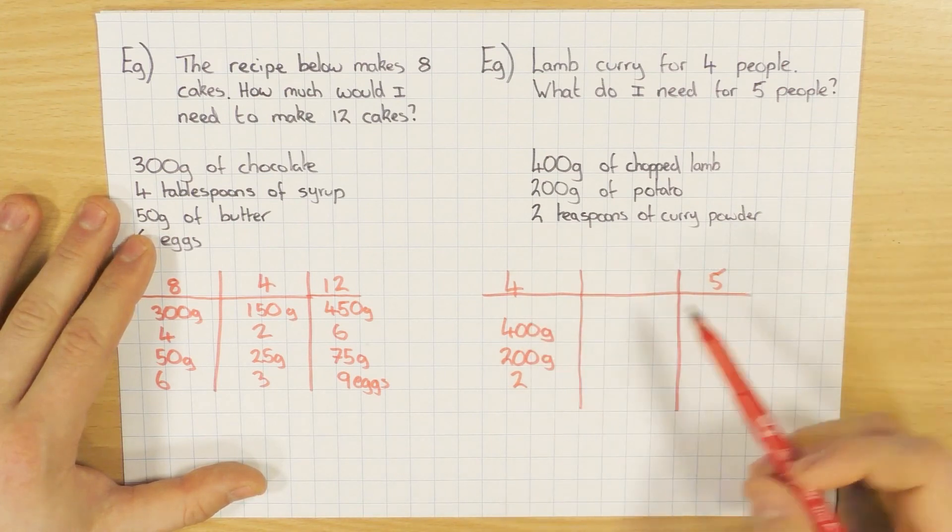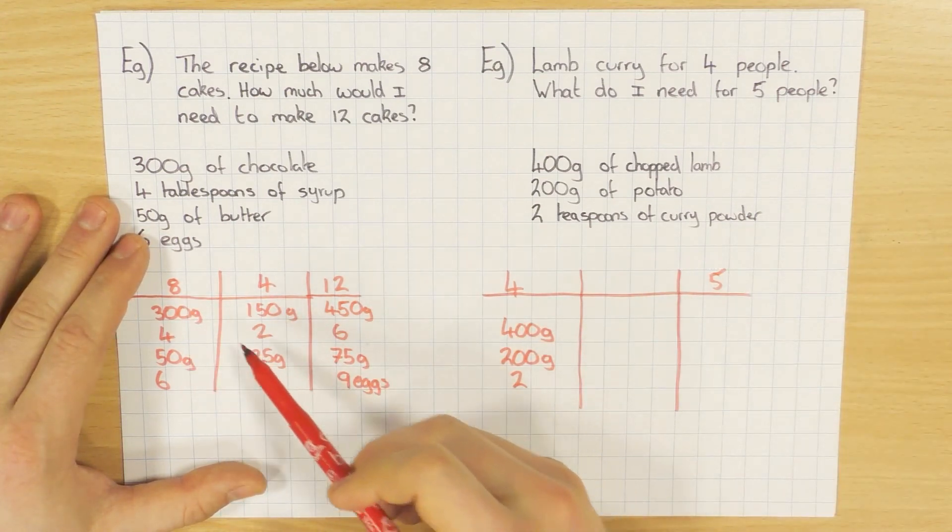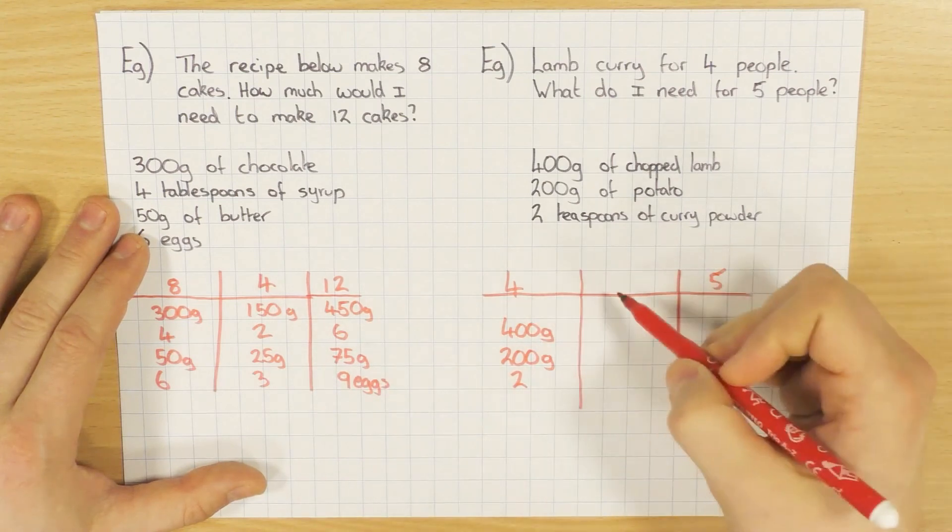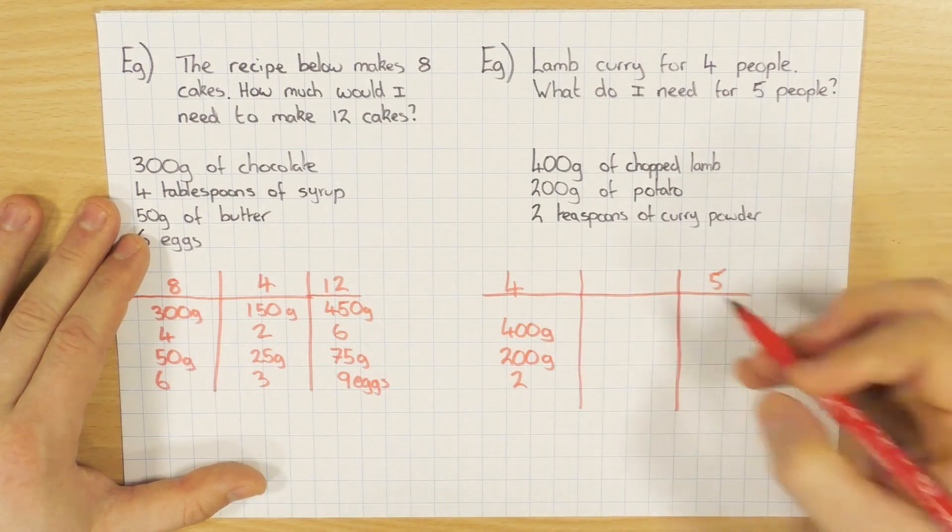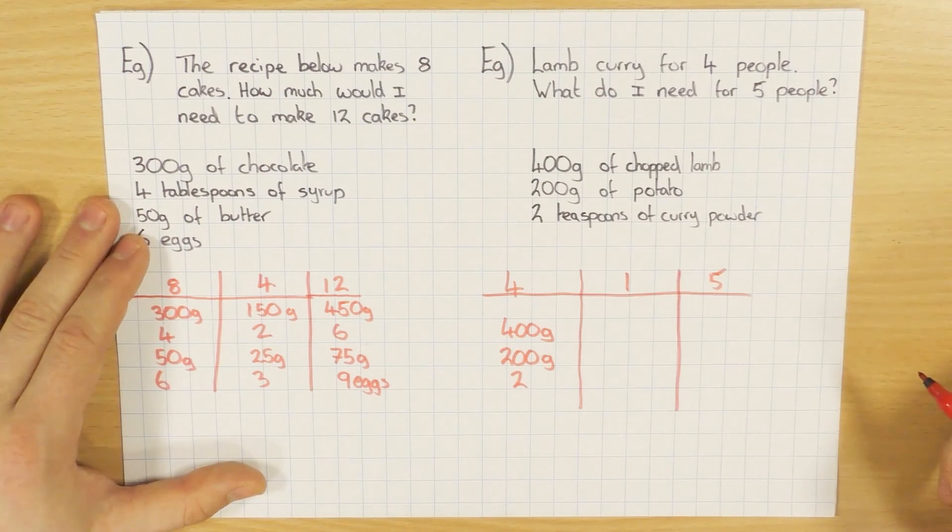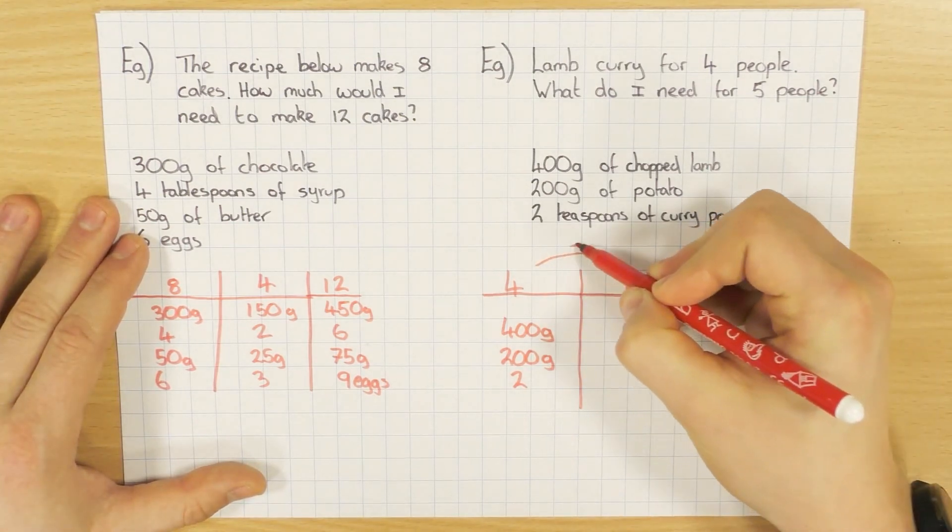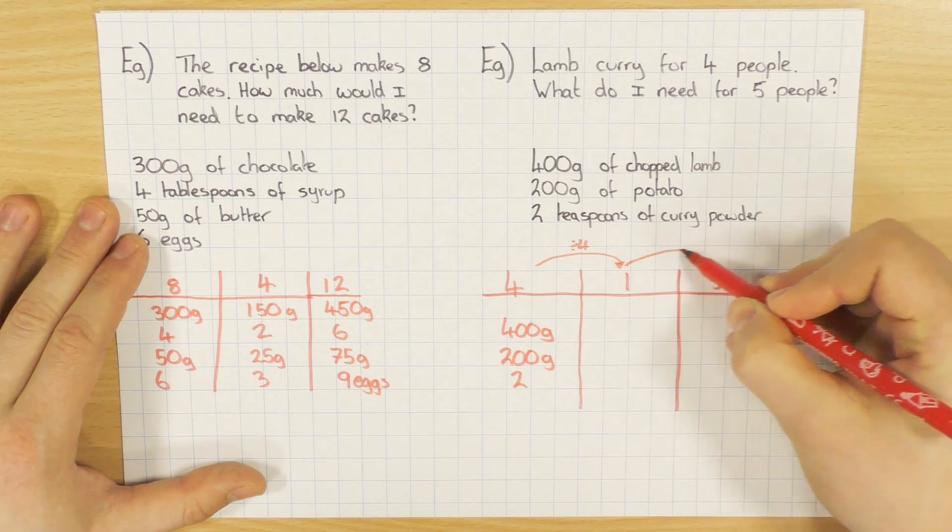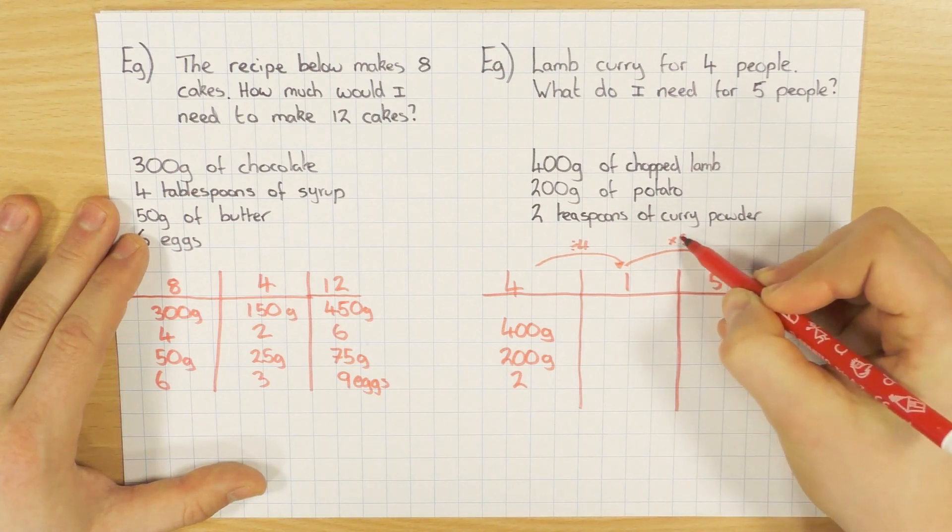So it doesn't quite fit nicely, just like this one. And we couldn't just half it to find it, or divide it by four, or anything like this. So in this case, unitary method does help us. So if we find out how much it is for one person, by dividing by four, we can then work out what it is for five people by timesing it by five.